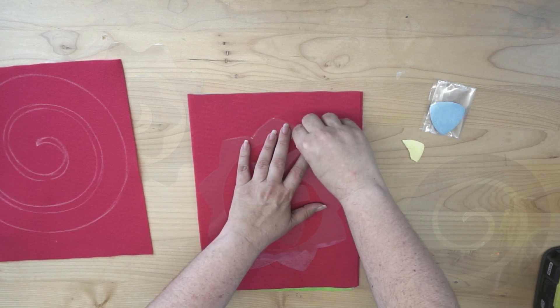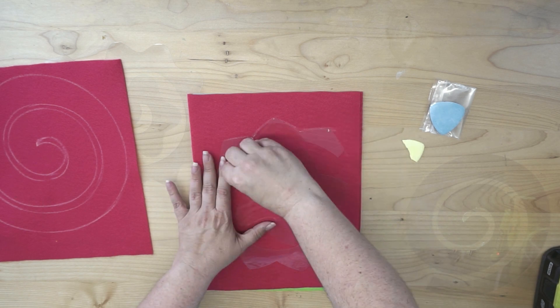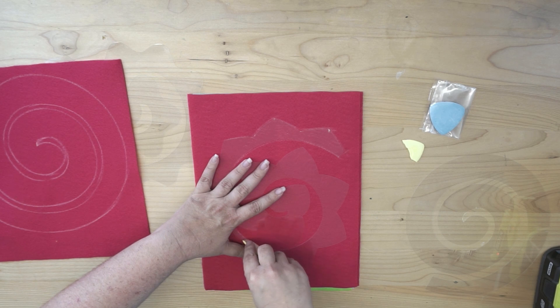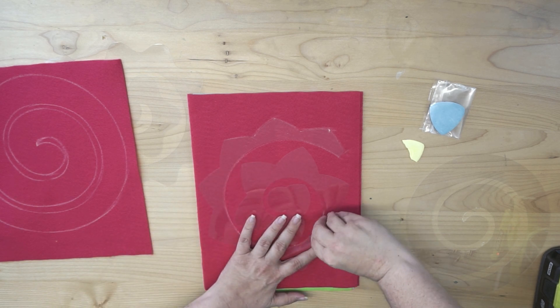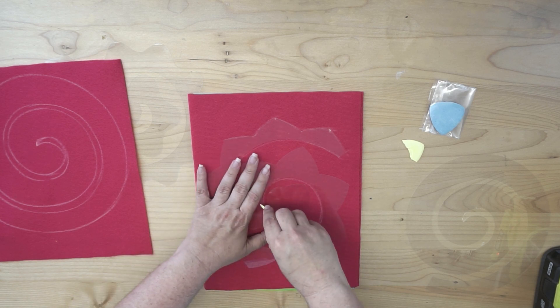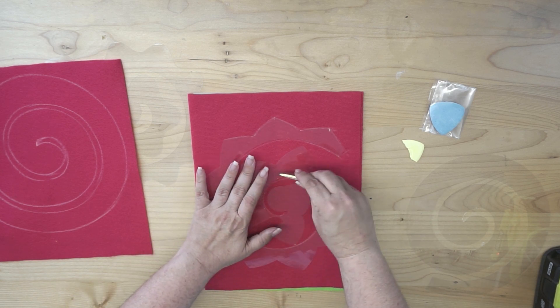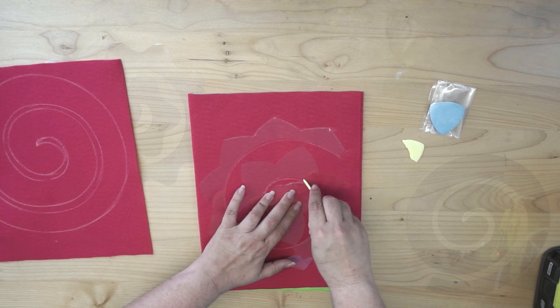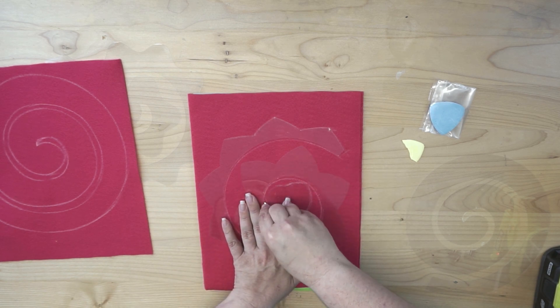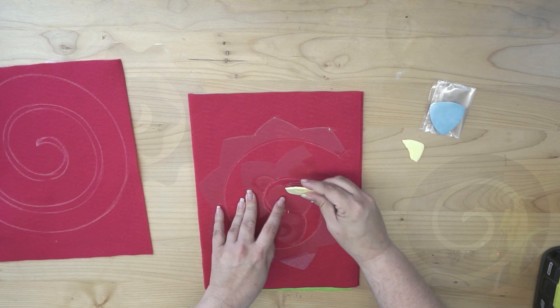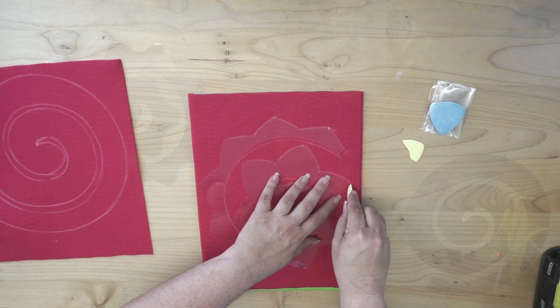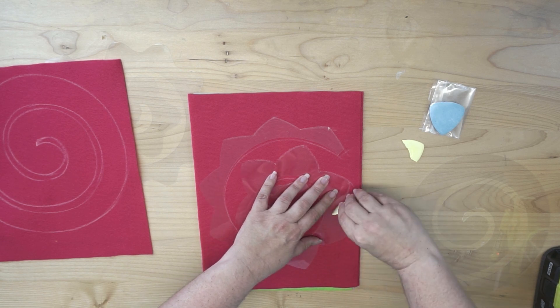Now is this the quickest thing that can be done? Probably not. Because if you happen to have a Maker or a Cameo 4, then you have the rotary blade that can cut the felt for you. But in case you do not have a rotary blade, or you don't have a machine that has that capability, this is a pretty easy way to repeatedly cut shapes out of material that you would not normally be able to cut. And that's the key here.